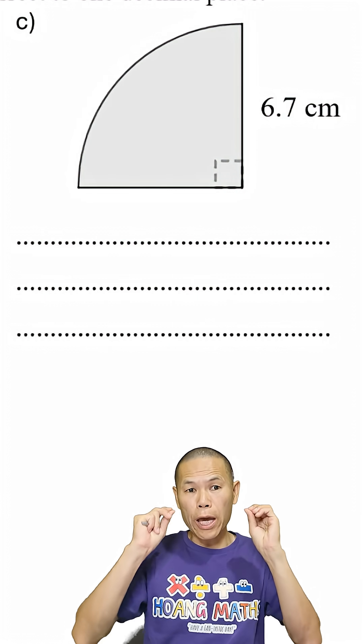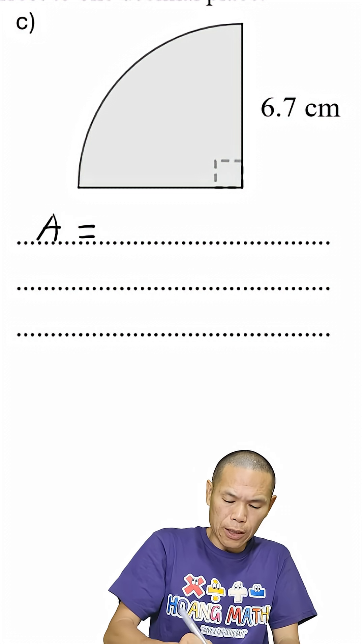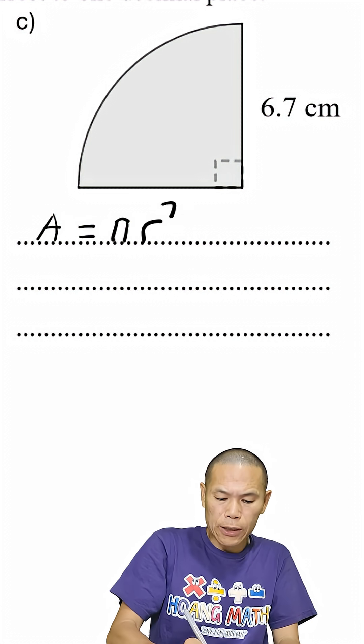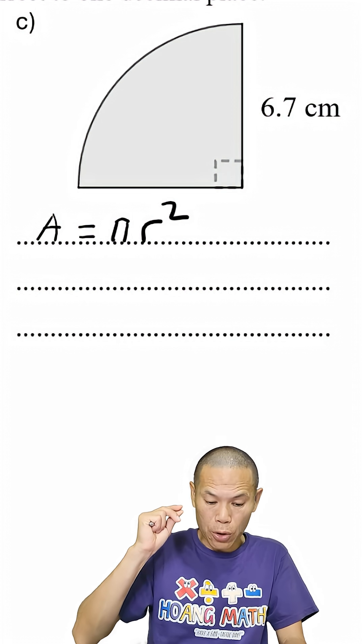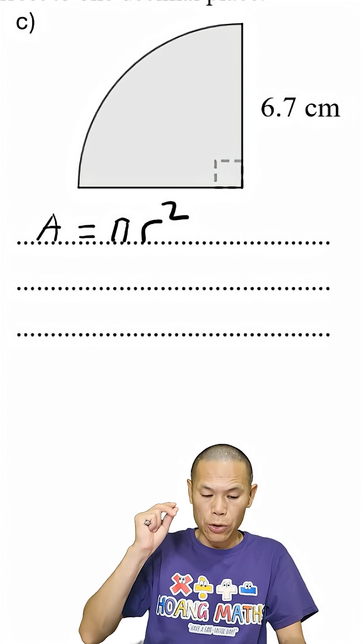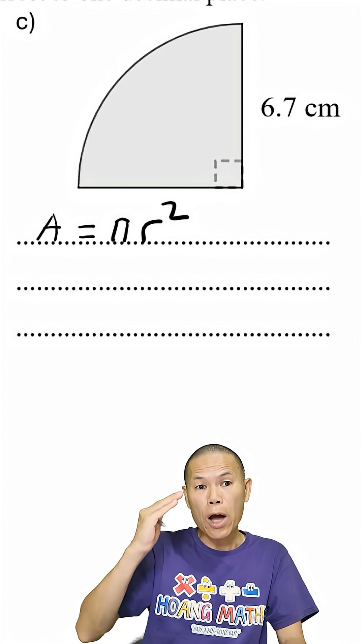Part C. So area of a circle A is π r squared, and we just need to have a quarter of it because this sector here is 90 degrees. So you can times 90 over 360 degrees or a quarter.